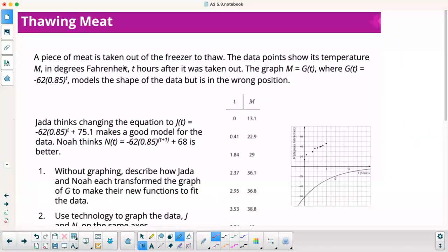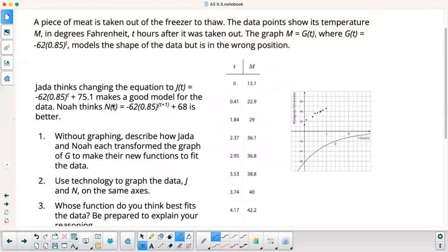All right. Let's take a look at this one. A piece of meat is taken out of the freezer to thaw. The data points show its temperature M in degrees Fahrenheit. T hours after it was taken out. So the graph M equals G of T, where G of T equals negative 62 times 0.85 to the T. Model is the shape of the data, but is in the wrong position. So Jada thinks changing the equation to J of T equals negative 62 times 0.85 to the T plus 75.1 makes a good model for the data. And Noah thinks that N of T equals negative 62 times 0.85 to the T plus 1 plus 68 is better. So without graphing, describe how Jada and Noah each transformed each graph.